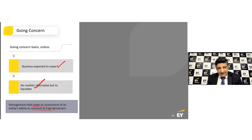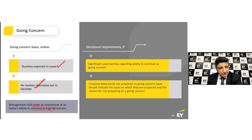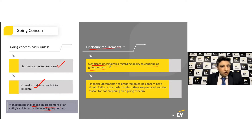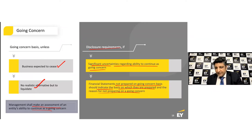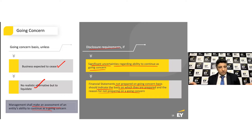That is where management and auditors need to assess very candidly whether the going concern assumption is valid or not. If there is a valid assumption about going concern, then absolutely fine. But you need to disclose if there are significant uncertainties regarding the ability to continue. In case the financial statements are not prepared on a going concern basis, you need to quantify and assess what is the reason for not preparing on a going concern basis.